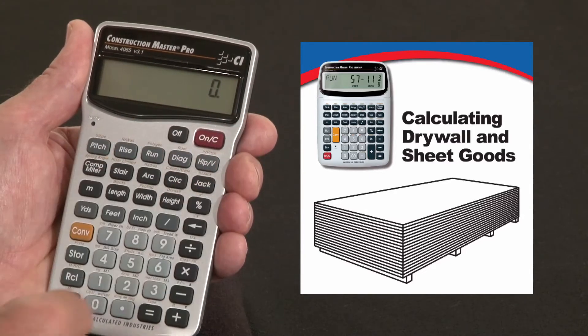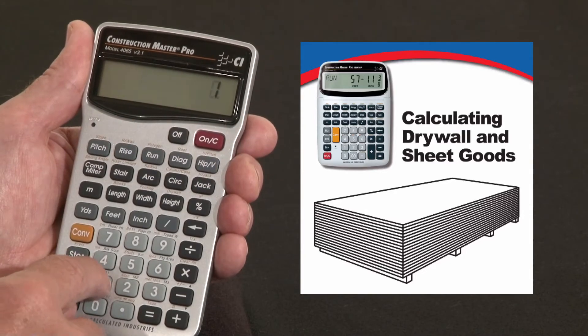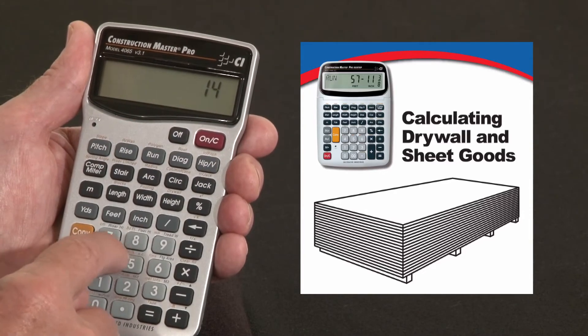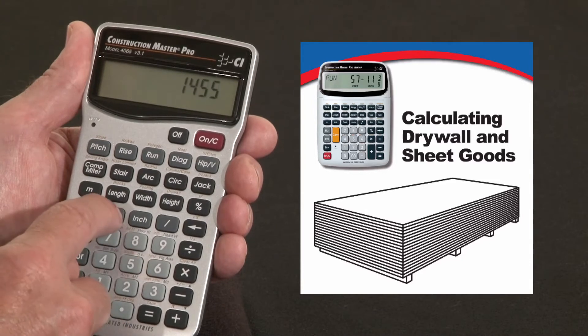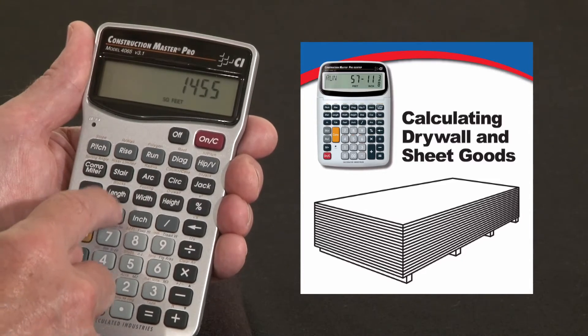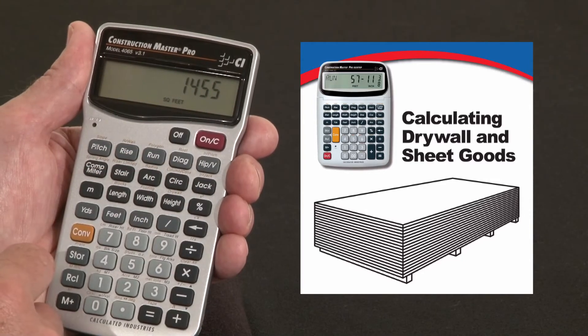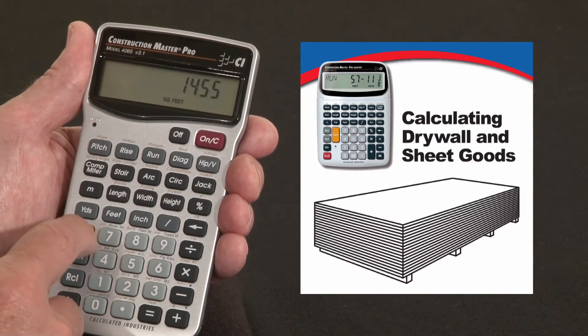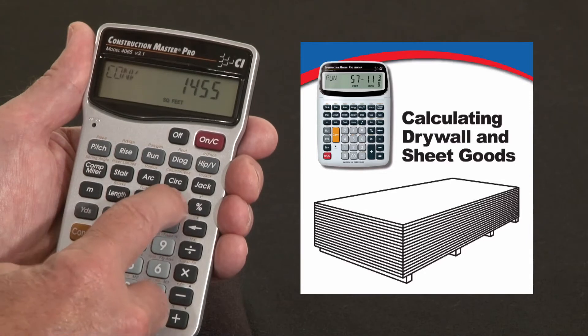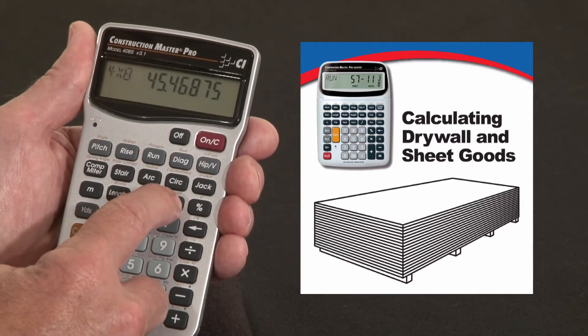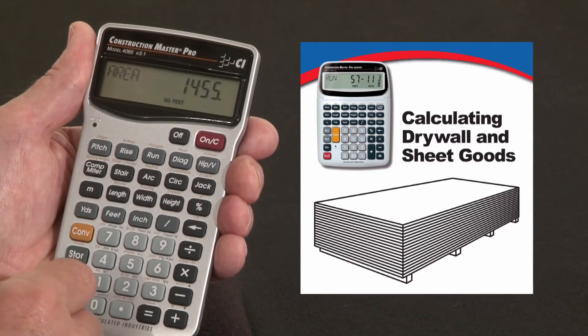Another way to do it is if you already know the square footage, you can enter it directly. 1,455 square feet is my wall surface area of a room or a house. You can then just convert that to drywall and go through all the same number of sheet calculations.